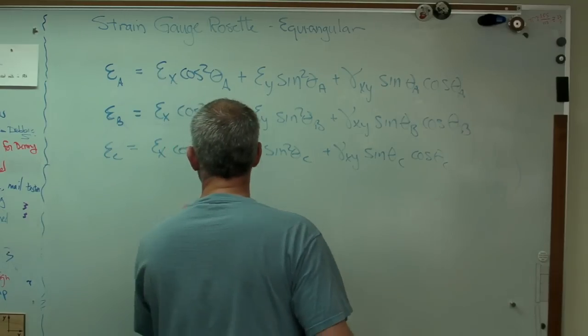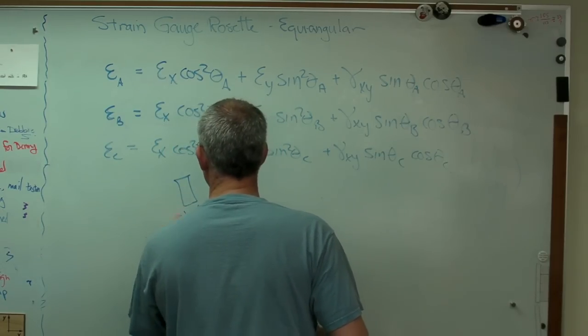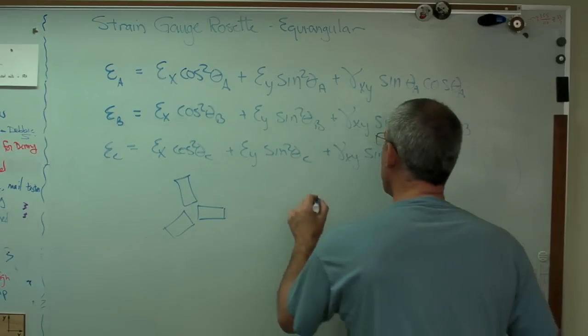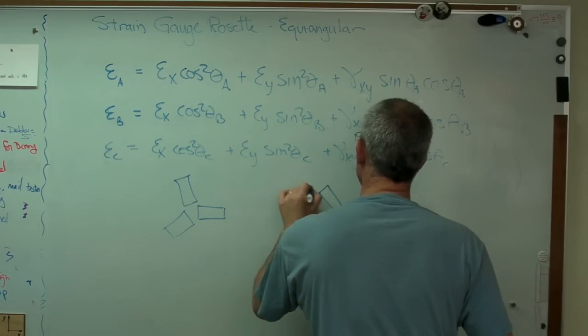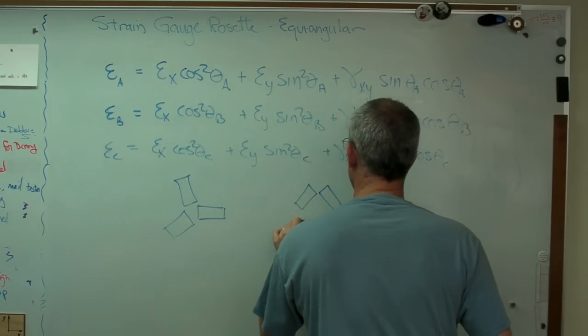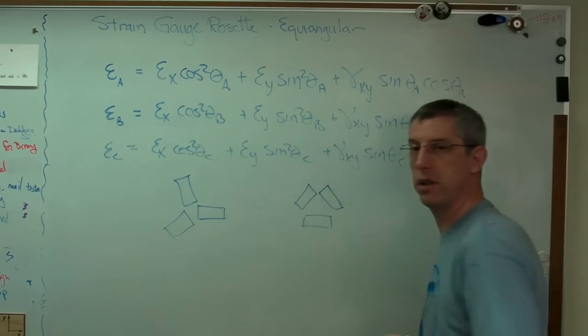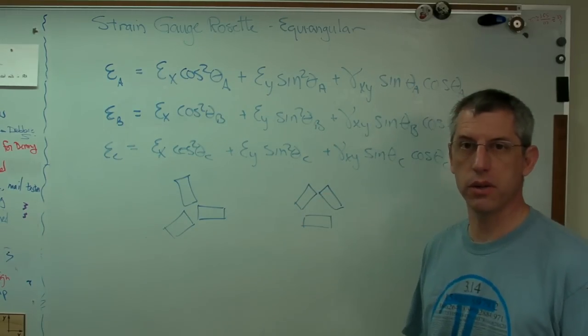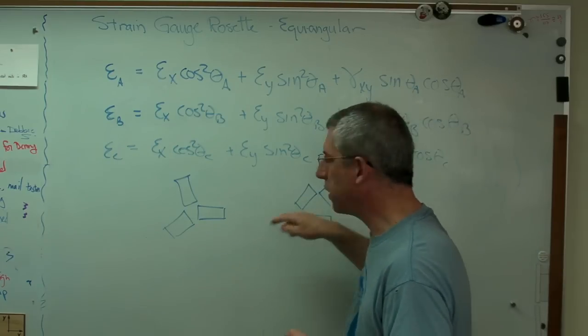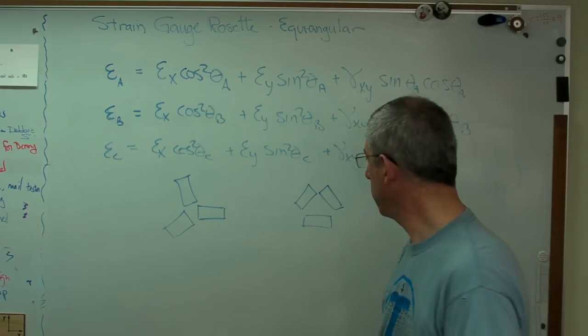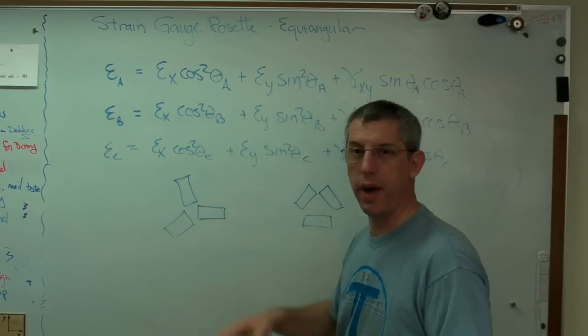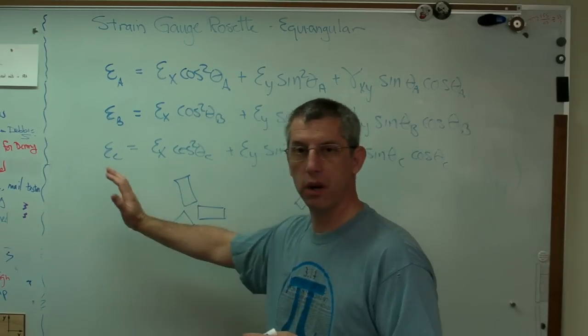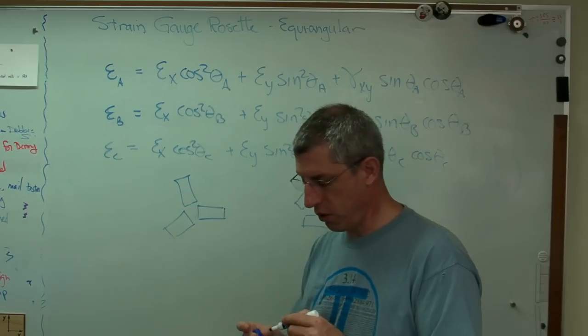By the way, I drew the gauge, the rosette, like that. It's kind of like a propeller, I suppose. There's no reason you couldn't place them like that. That's zero, 120, 240. The angles are the same. They're just placed a little differently with respect to one another. And the reason we can do this or that, we assume that the strains vary very slowly across the area of this rosette.